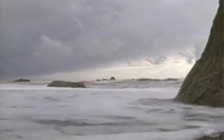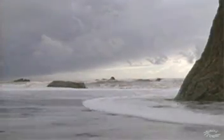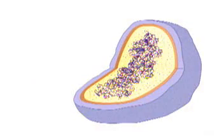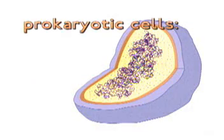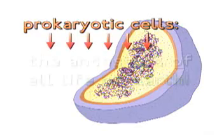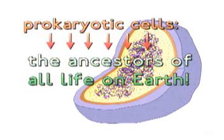Over millions of years, random combining of these complex molecules took place. Some believe that life first developed in the shallow waters of a primordial sea. Others think it was in a hydrothermal vent deep beneath the surface. We will probably never know, but it is generally agreed that life first began as a tiny prokaryotic cell 3.8 billion years ago, and this cell is the ancestor of all life on the planet.